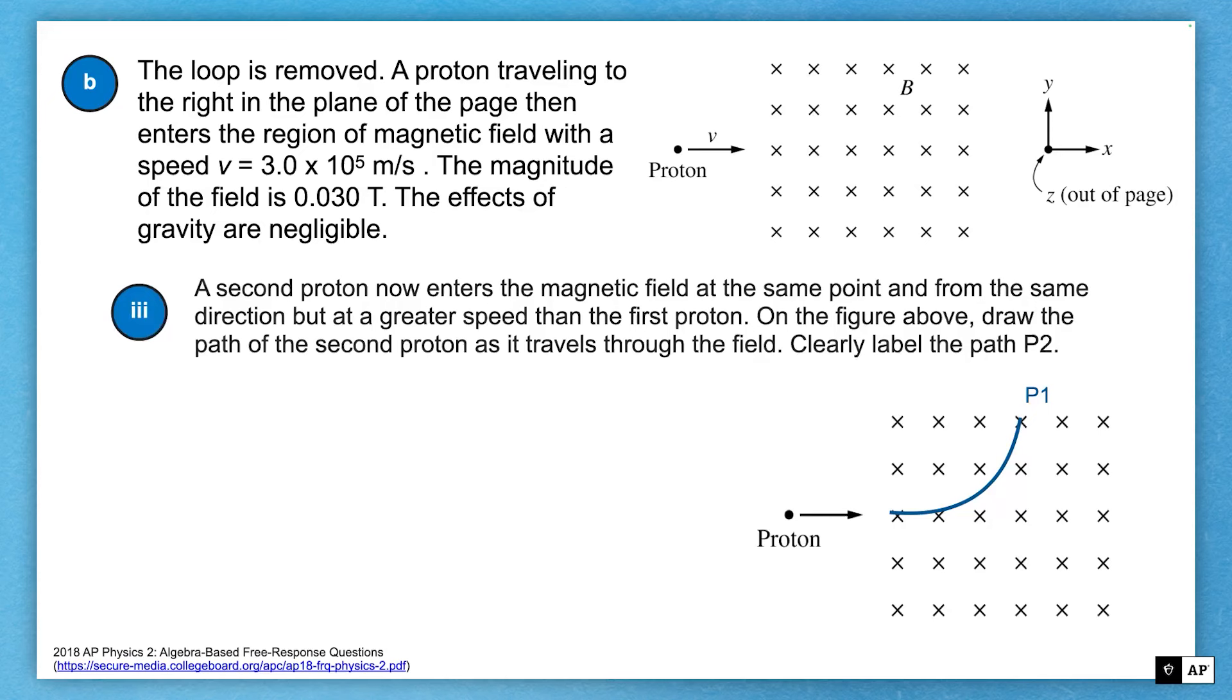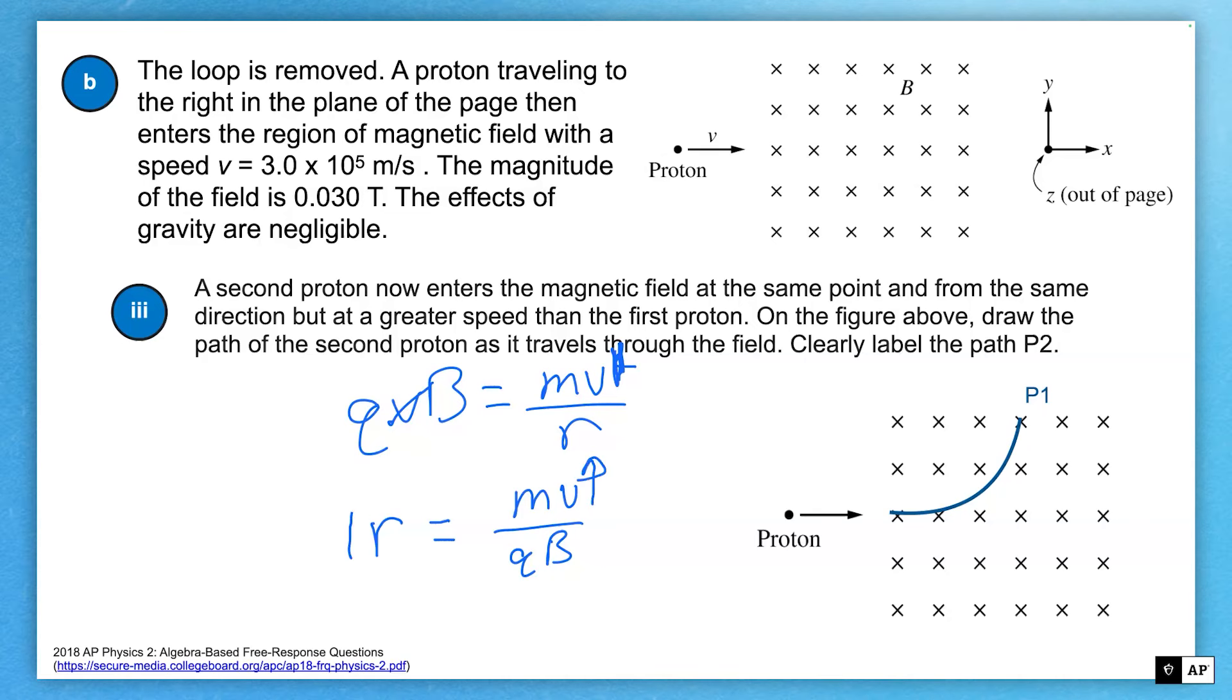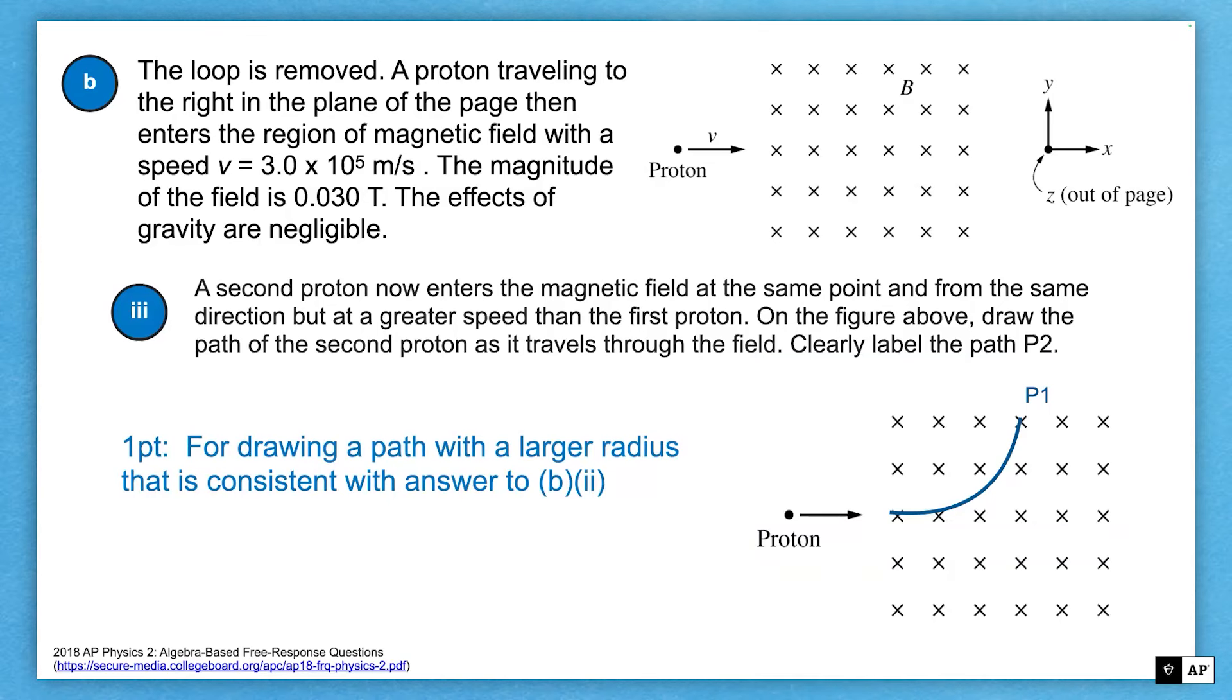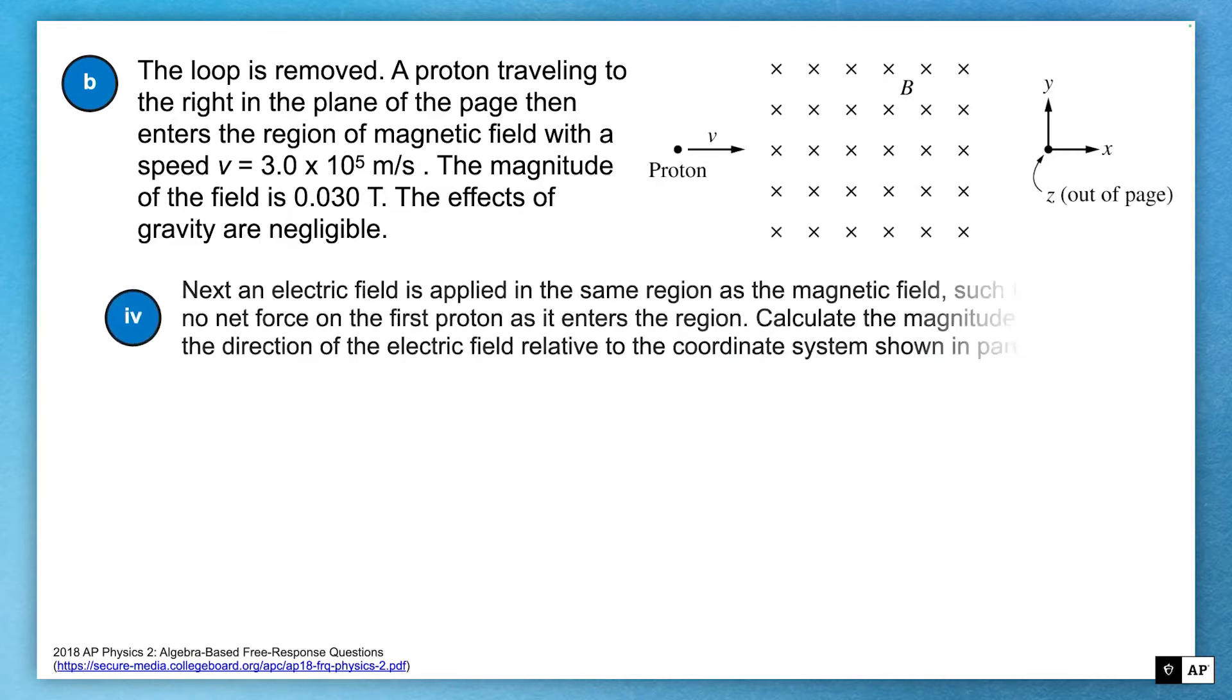A second proton enters the magnetic field at the same point and in the same direction, but at a greater speed than the first proton. How's that going to interact with things? Well, I'm going to need to think about that QVB acting as a centripetal force, that my QVB is acting as a centripetal force. And if I cancel my V, this power up here, and solve for R, I get MV over QB. And they said that they increased the V and kept everything else the same. So if I make the numerator bigger, then my radius will be bigger. And let's see what they've got for drawing a path with a larger radius that is consistent. And look, they've got it labeled path P2 there.